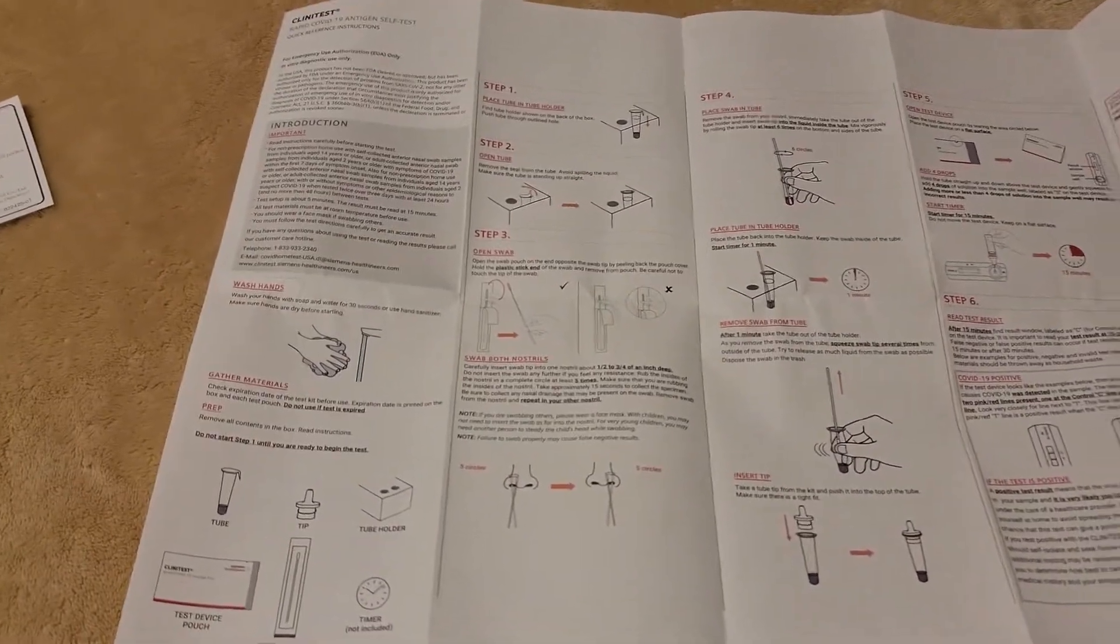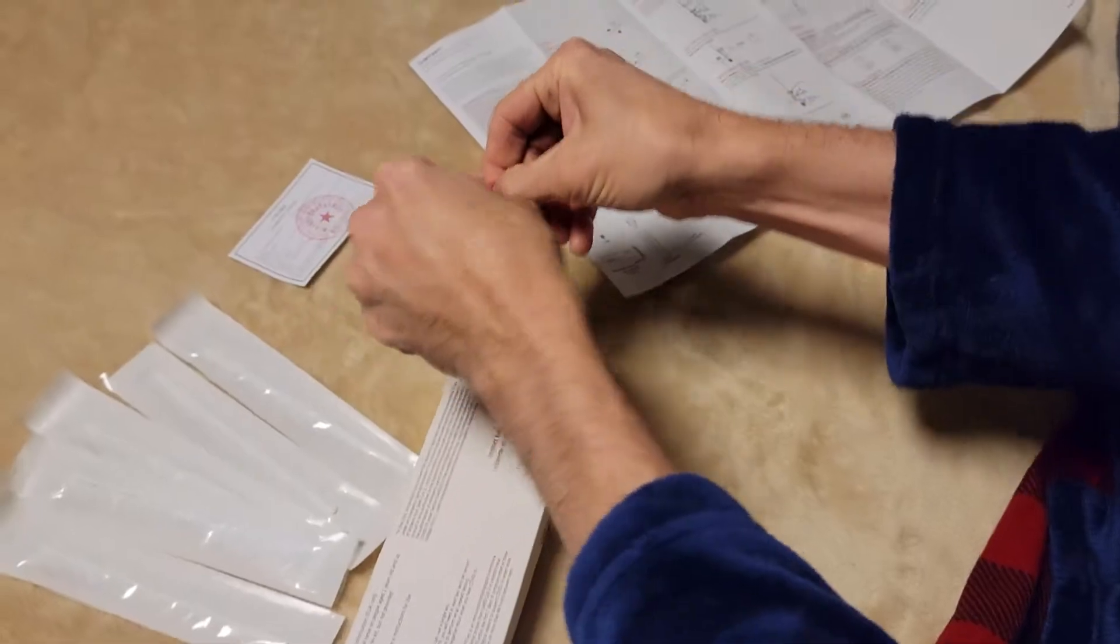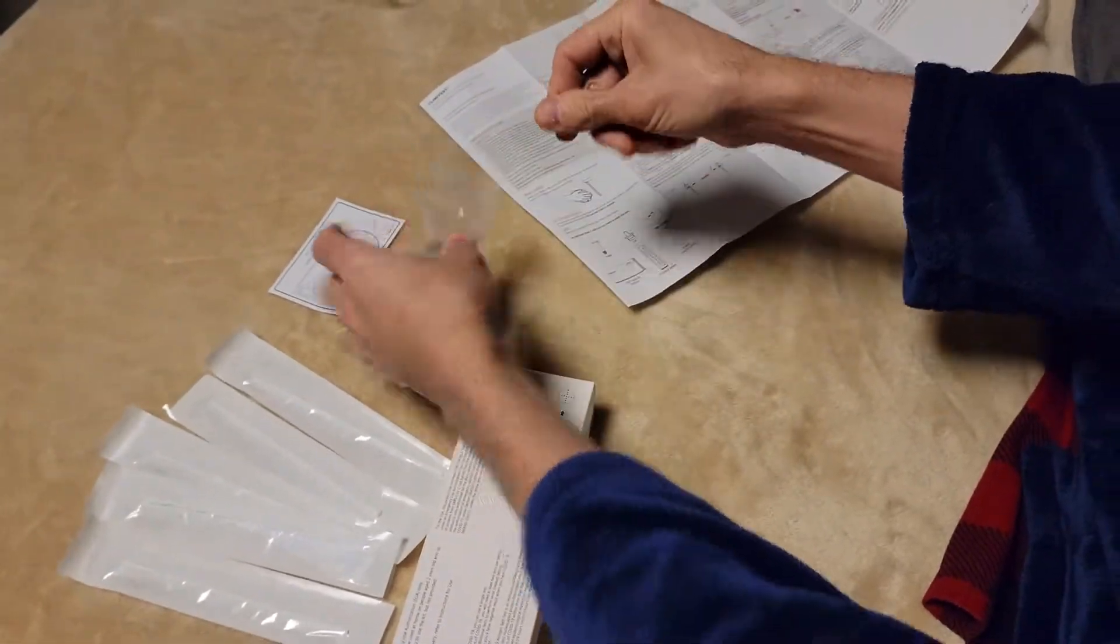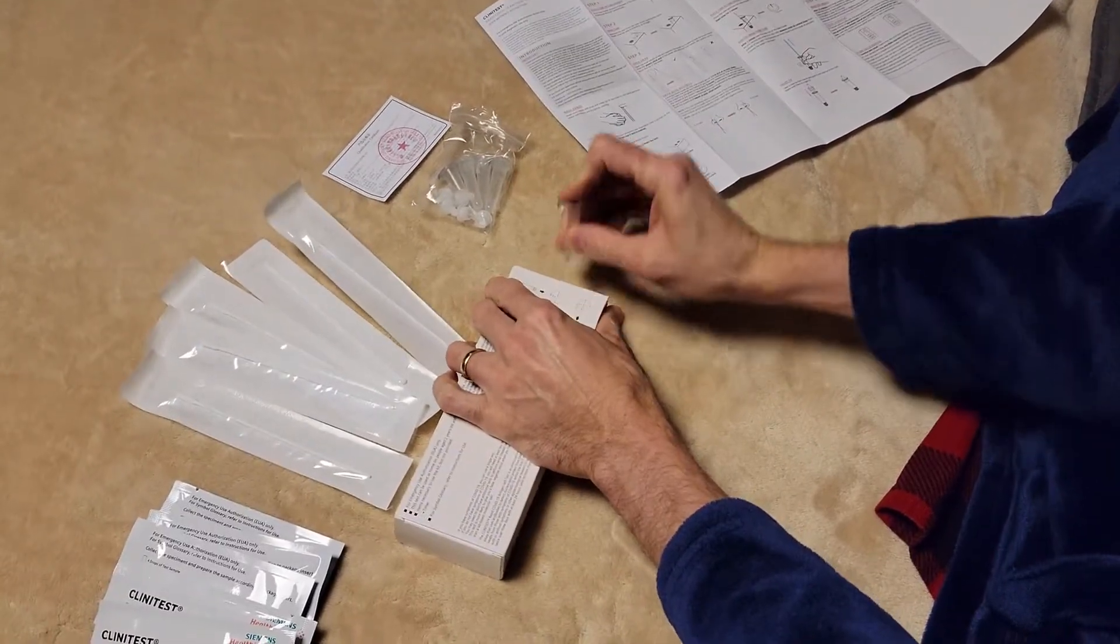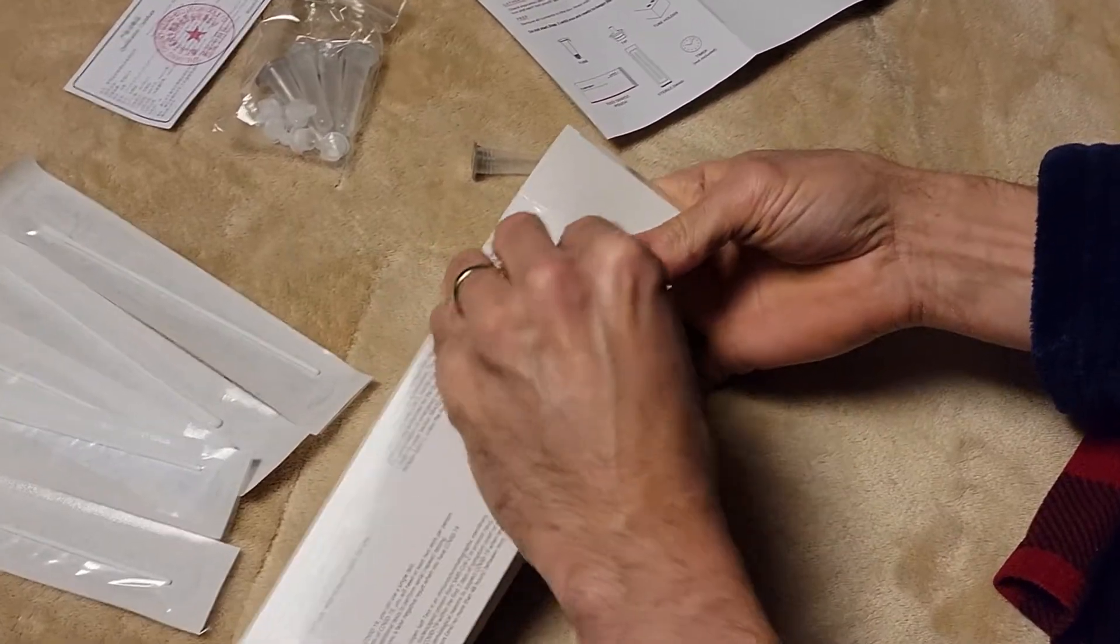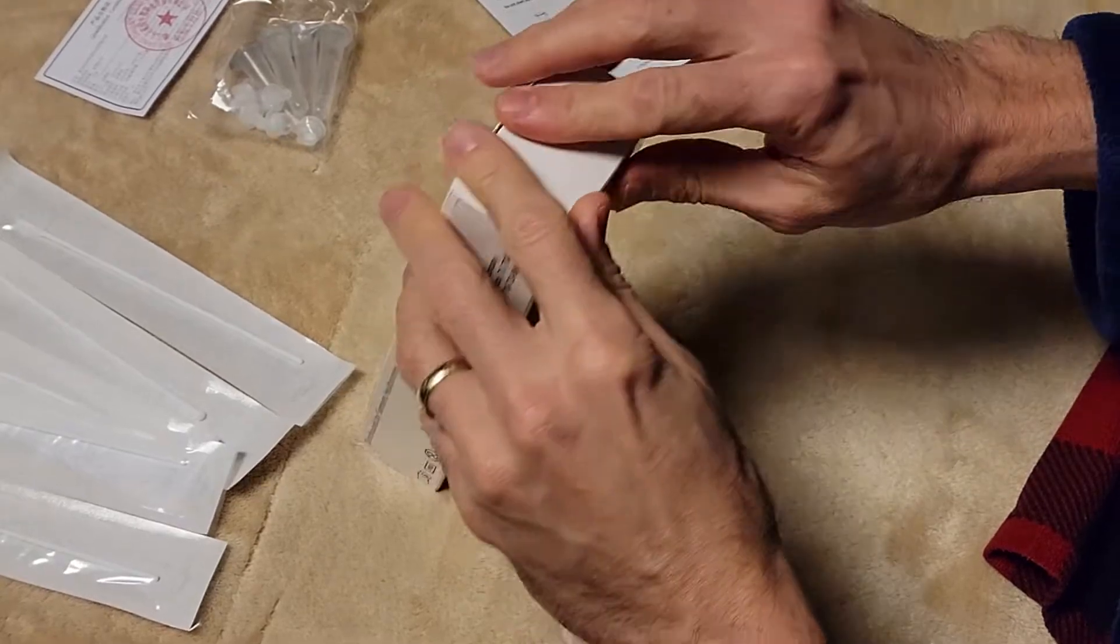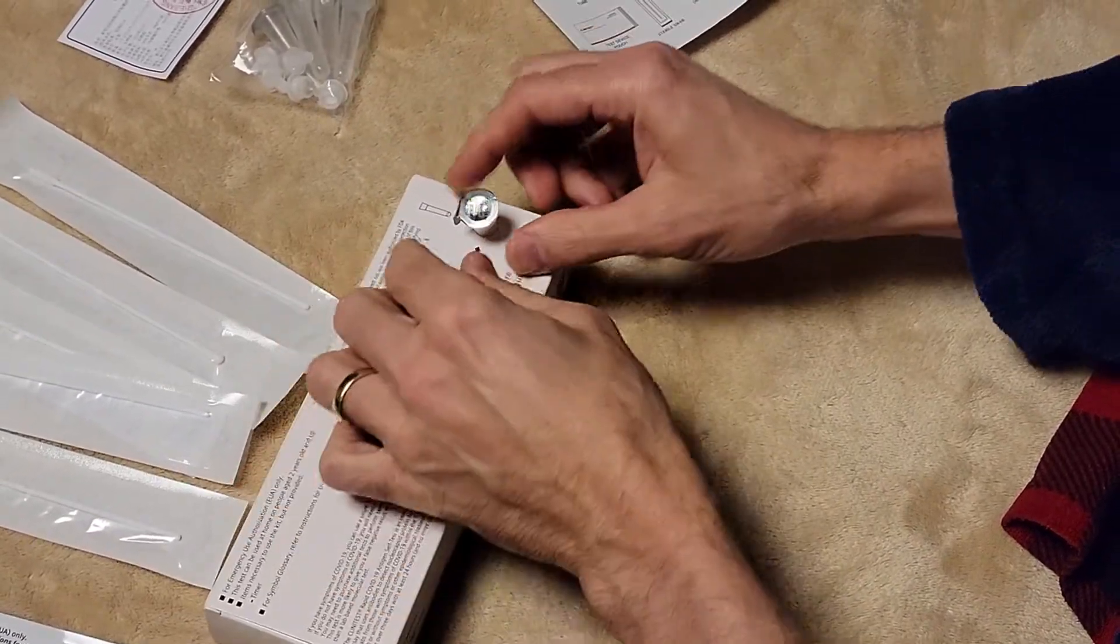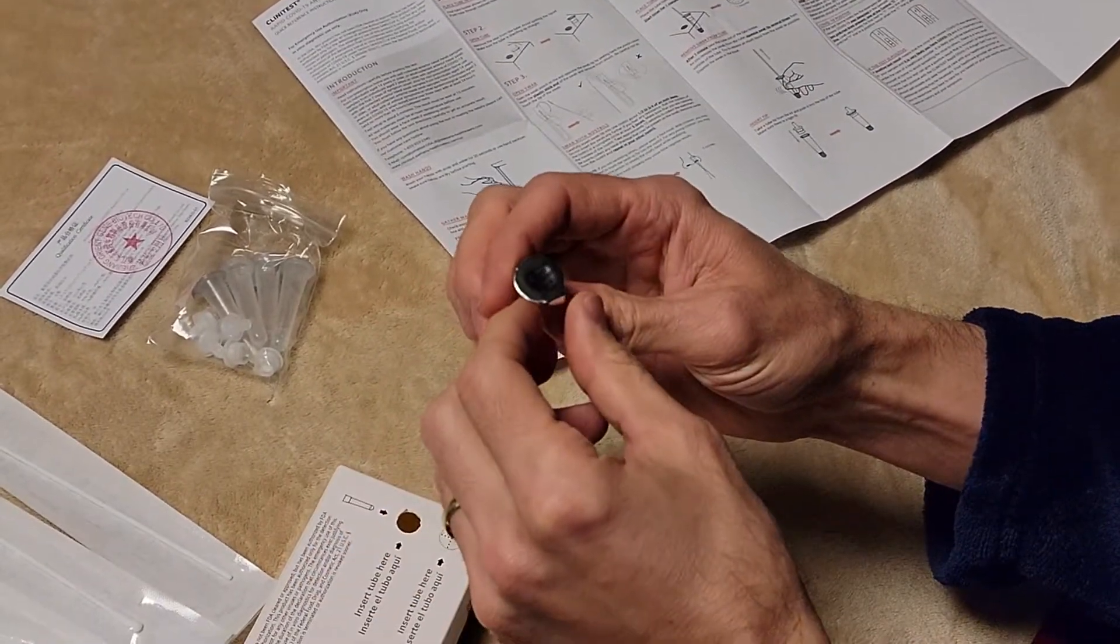And then this box which has these little cutouts here and the instructions. So we're going to go ahead and bust this out real quick. So washed our hands already. Next step, we're just going to open this up and pull one of these out. And it says these go right in here, insert tube here, and I'll punch that out there on the box. There we go. Make sure your box is solid. Okay, and it says so place the tube in the holder.